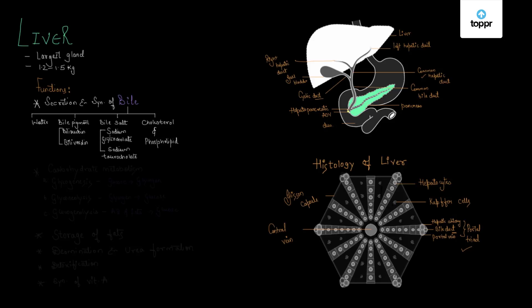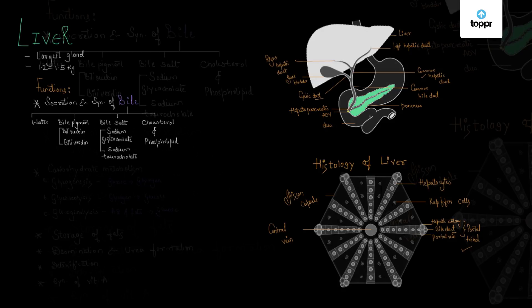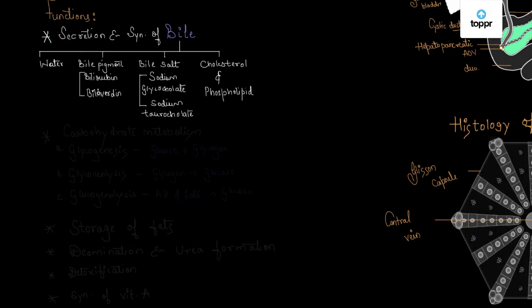Observing carefully, the bile contains bile pigments, bile salts, cholesterol, and phospholipids. Bilirubin and biliverdin are the bile pigments which give bile a light greenish color. The bile salts present are sodium glycocholate and sodium tauroglycocholate. These two help in forming the bile pigments.